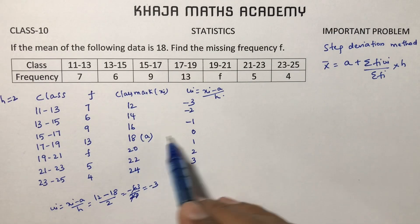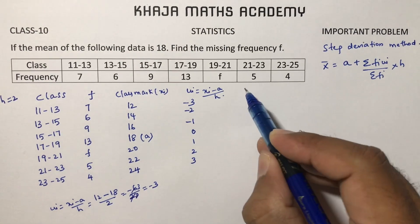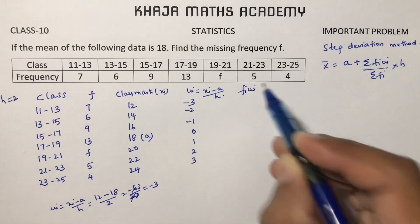Or otherwise, wherever you will assume a, beside that you can take 0, minus 1, minus 2, minus 3, 1, 2, 3 for ui. Now calculate Fi ui.